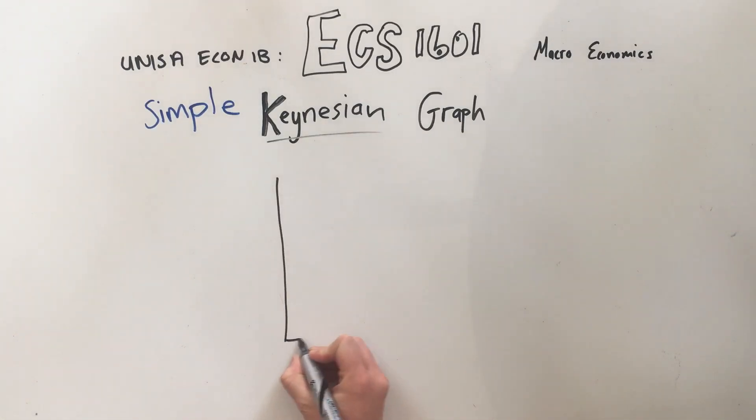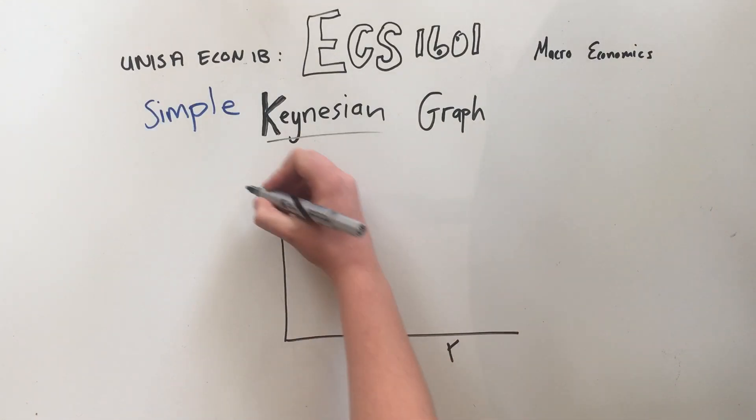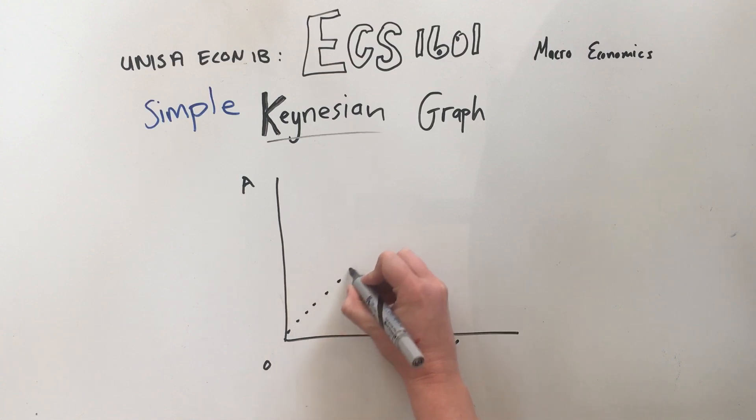We draw a graph just like we did in microeconomics, except over here we have Y and we have A. We make a zero and we make dotted lines and say that's 45 degrees.